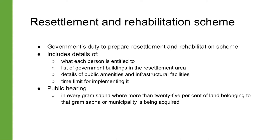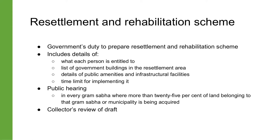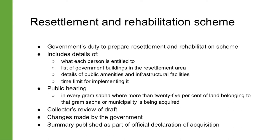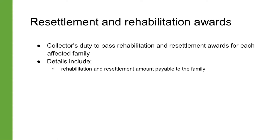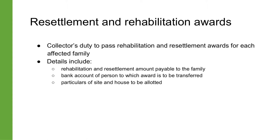A draft of the rehabilitation and resettlement scheme has to be presented at public hearings at which forest dwellers can submit their objections. These public hearings must be conducted in every Gram Sabha where more than 25% of land belonging to that Gram Sabha or municipality is being acquired. After the draft and objections have been reviewed by the collector and any changes made, a summary of the scheme must be published as part of the official declaration of the acquisition. The collector has to pass rehabilitation and resettlement awards for each affected family, including the amount payable, bank account details, and particulars of house site and land allotted to displaced families.